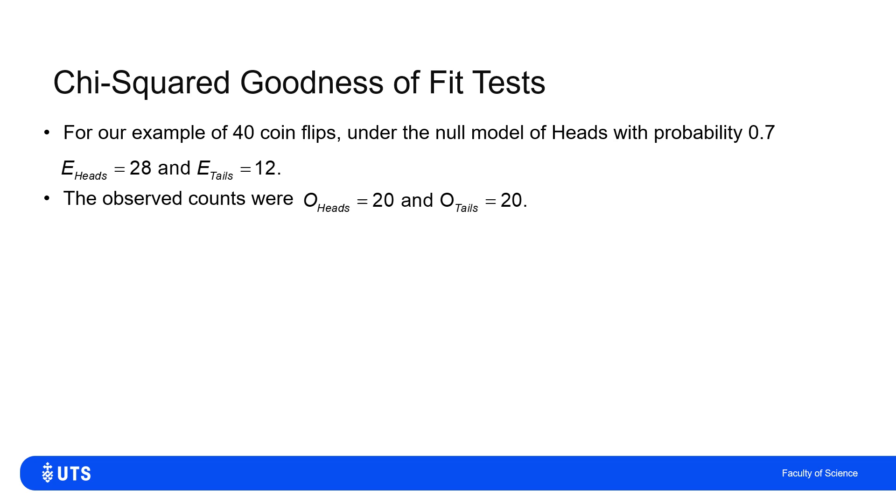Obviously, I don't think I will get the hypothesized values of 28 and 12 every time. But I want to see whether my 20 and 20 is too far removed from that for me to continue to retain that hypothesis. So I work out the (Oᵢ - Eᵢ)²/Eᵢ, add them together, and I'll get 7.62.